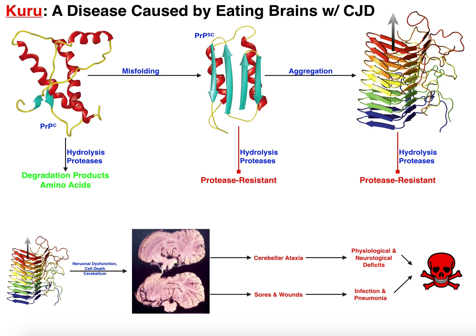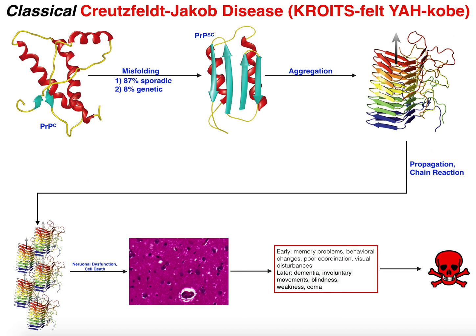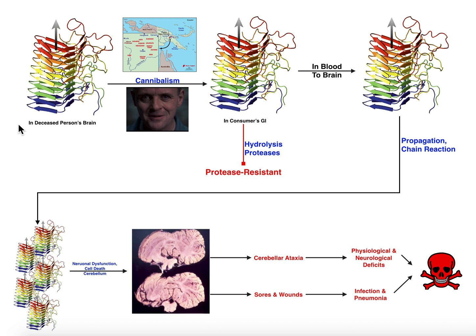Kuru is going to be very similar to classical Creutzfeldt-Jakob disease in the sense that it involves the same protein and the same misfolding, except for the fact that the aggregate is going to have to come from an extraneous source — i.e., cannibalism.